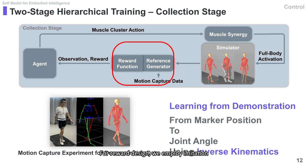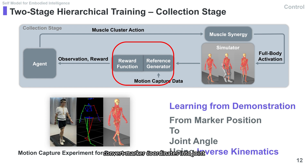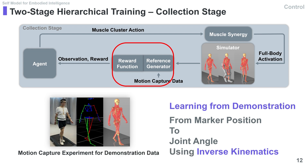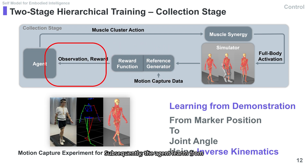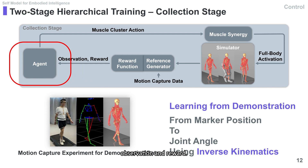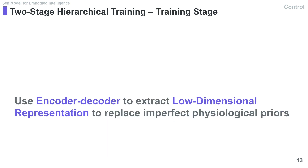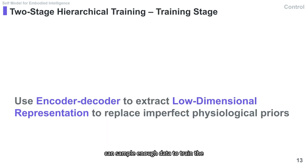For reward design, we employ imitation learning utilizing optical motion capture data. We apply inverse kinematics to convert marker coordinates into joint angles and design rewards based on these joint angles. Subsequently, the agent learns from observation and reward. After training in the first phase, we can sample enough data to train the encoder-decoder.